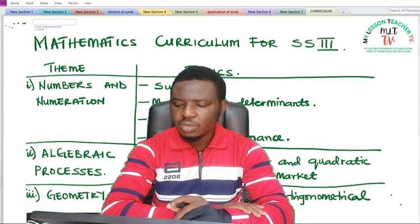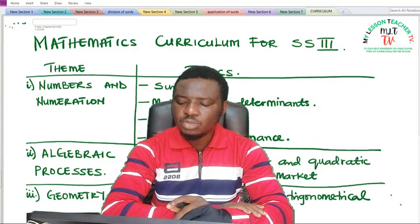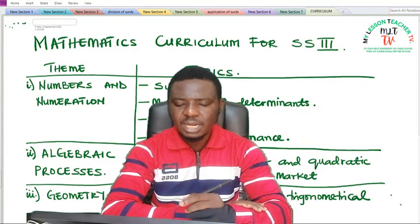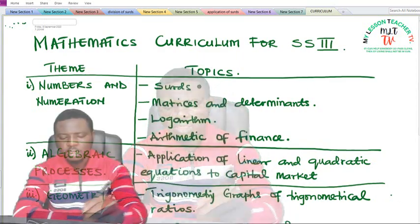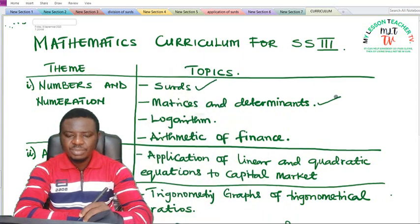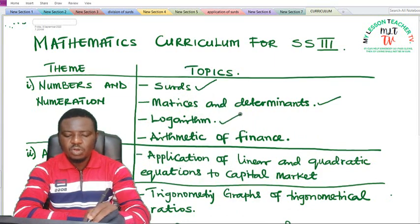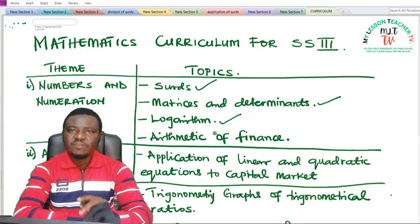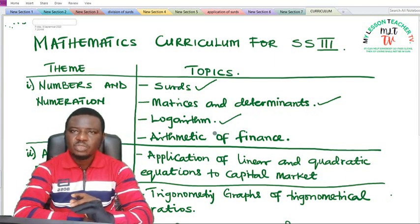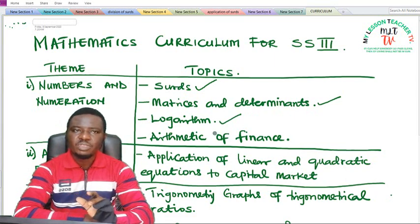So in SS3 we have the theme Numbers and Numeration. Under Numbers and Numeration we have topics like sorts, matrices and determinants, and logarithm. The logarithm in SS3 is different from that of SS1 and 2. The logarithm in SS1 and 2 has to do with logarithm of numbers less than 1 and logarithm of numbers greater than 1 with the use of tables.